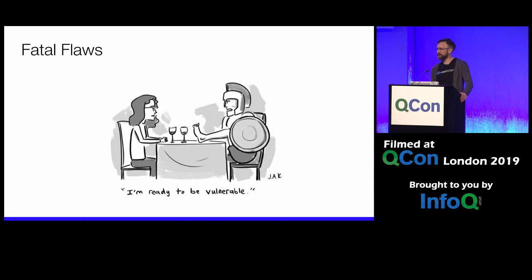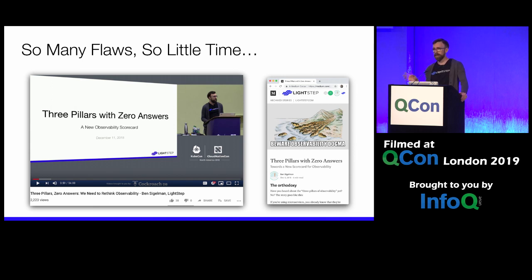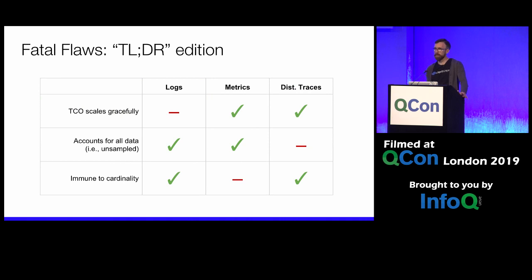There's a much longer version of this talk I did at KubeCon where I really dig into the specifics of the problems with each one of the observability pillars. They're all totally valuable, to be clear, but not as a solution unto themselves. We're already half an hour into my KubeCon talk's content, so you've saved a lot of time. Here's a table that tries to summarize the issues with each.